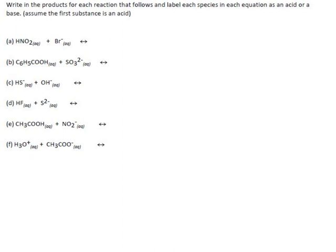We've seen what acid-base reactions look like in Bronsted-Lowry mode. There are pairs of chemical species: one that has a hydrogen, and one that has given it away — that's what we call an acid and its conjugate base. Then we have bases, which have room for a hydrogen, and conjugate acids, which have acquired it.